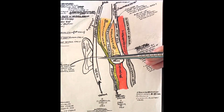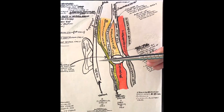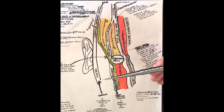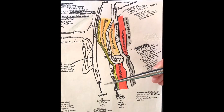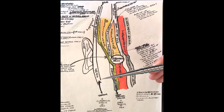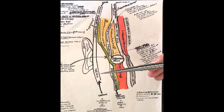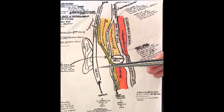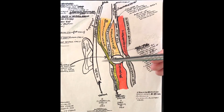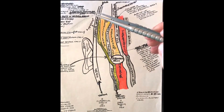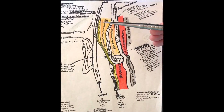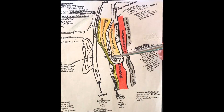The zygomatic and buccal branches will be deep to the SMAS in the mid-face, as will the marginal mandibular. The cervical branch will be deep to the platysma and its fascia as it transitions from platysma to SMAS in the mid-face and lower mid-face. Deep to that you can see the frontal branch, and we'll come back to the course of the facial nerve after we get through the different layers.